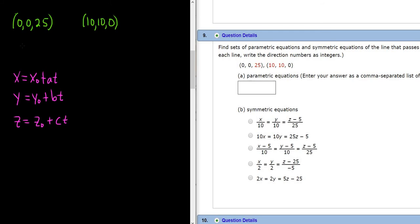So the first thing we should do in this problem maybe is find a parallel vector. So to do that, you can just take these two points that are on your line and do the terminal minus initial formula. So just subtract the points.